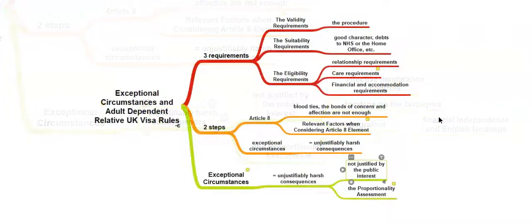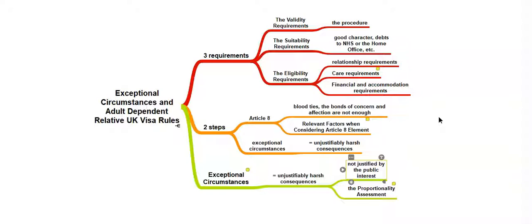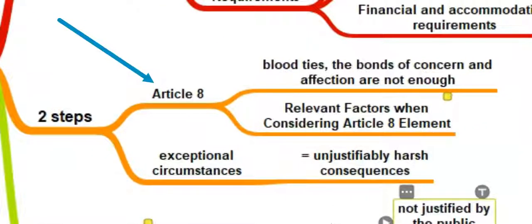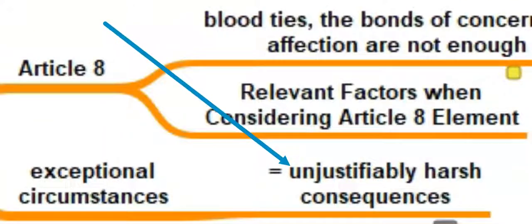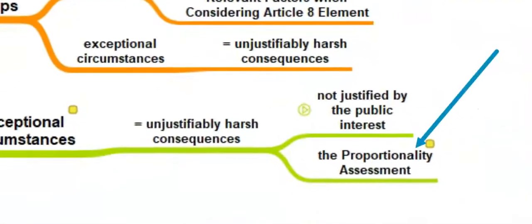To summarize: if you intend to submit your adult dependent relative UK visa application, you need to do your best to always engage Article 8 in the application. While the circumstances of each case are different and it is virtually impossible to give very specific instructions, you should always try to show something significantly stronger than normal emotional ties. You also need to prove that the refusal will have unjustifiably harsh consequences for all the family members, which is also not proportionate.